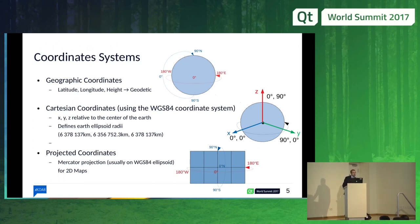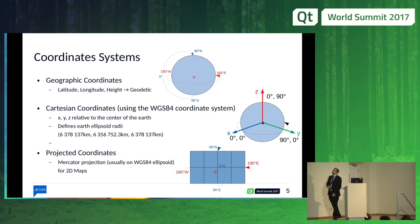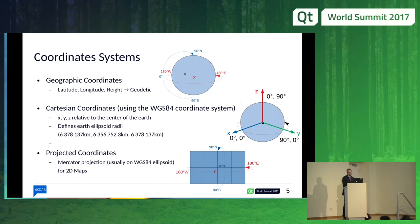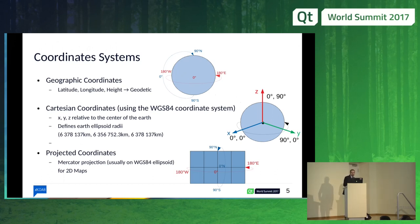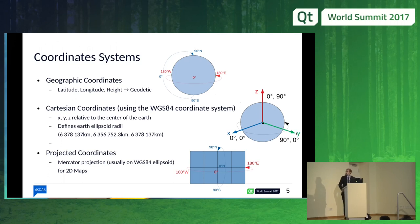So we need some kind of transformation from geographic coordinates to Cartesian coordinates. For that, we can use the World Geodetic System 84, which defines a coordinate system where the Earth is centered at zero. The x-axis goes from zero to the geographic location zero, zero, and the y-axis goes from the Earth center to 90 degrees of longitude, zero degrees of latitude.